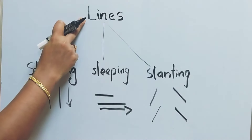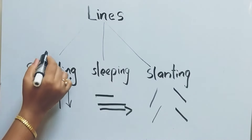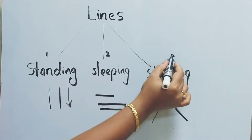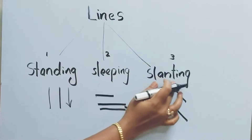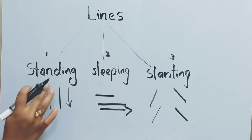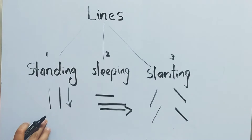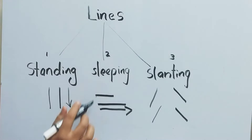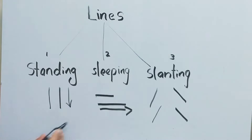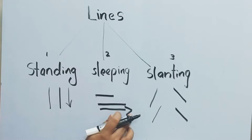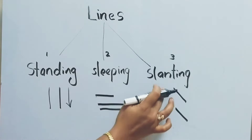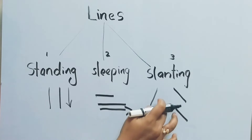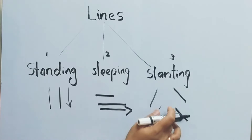Line concept — there are three line concepts: standing line, sleeping line, and slanting line. Standing is a vertical line, straight from up to down. Sleeping line is a horizontal line, side to side. Slanting line has a small slope — left slanting and right slanting.